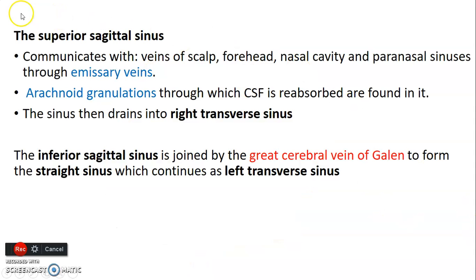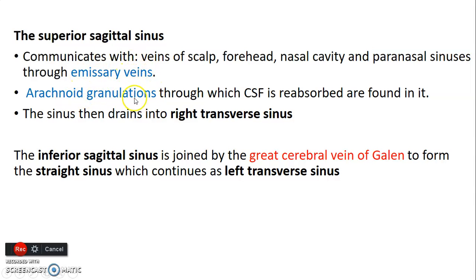The superior sagittal sinus communicates with the veins of the scalp, forehead, nasal cavity, and paranasal sinuses through emissary veins. This is clinically important because infection in these areas can spread into the superior sagittal sinus via emissary veins. Arachnoid granulations are also located here — they are where CSF is reabsorbed from the subarachnoid space into the superior sagittal sinus.